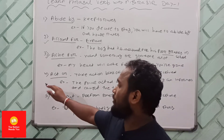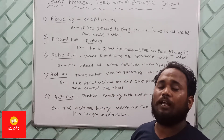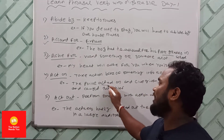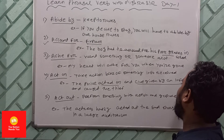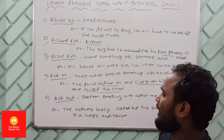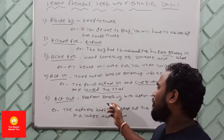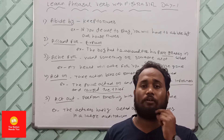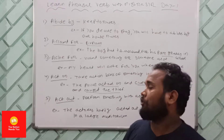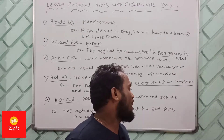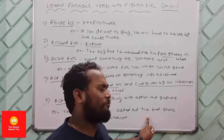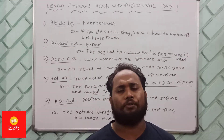Number four: 'act on' means to take action because you received some information. For example: The police acted on a clue given by an informer. Number five: 'act out' means to perform something with action and gesture — by body language and expression. For example: The actress happily acted out the said story in a large auditorium.